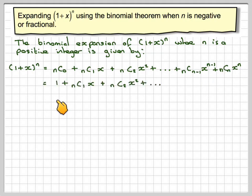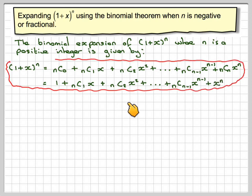nC0 is 1, so we've got 1 + nC1·x + nC2·x² up until the last two terms nC(n-1)·x^(n-1). And nCn is also 1, so we just end up with x^n. Now this works if the value of n is a positive integer.